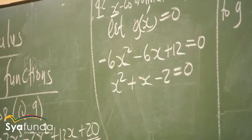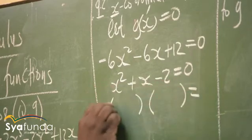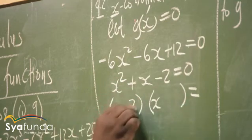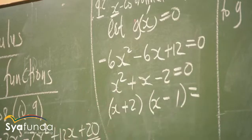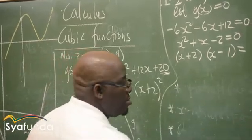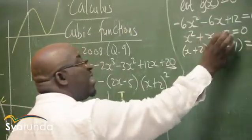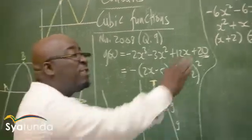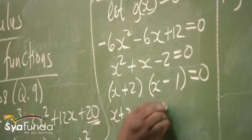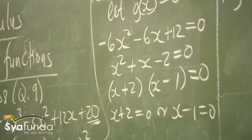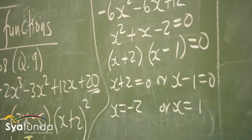Now factorize x squared plus x minus two equals zero. We have x and x; factors of two are two and one. Since the middle term is positive and the constant is negative, two is positive and one is negative. So we get x plus two times x minus one equals zero. Therefore x plus two equals zero or x minus one equals zero, giving x equals minus two or x equals one.